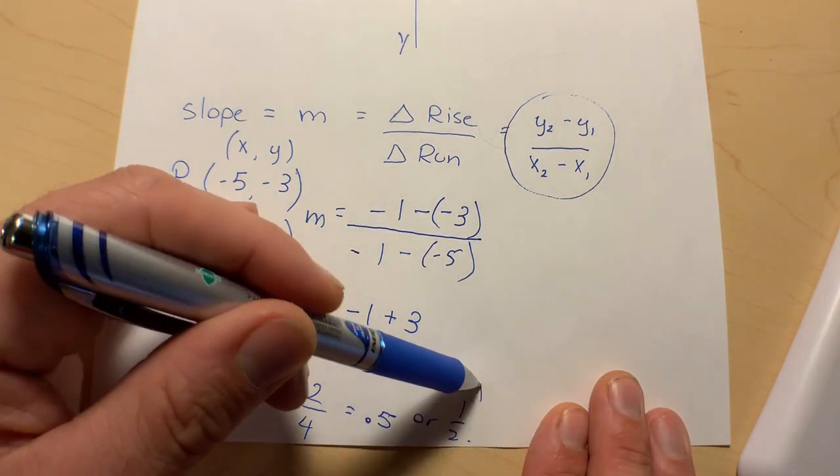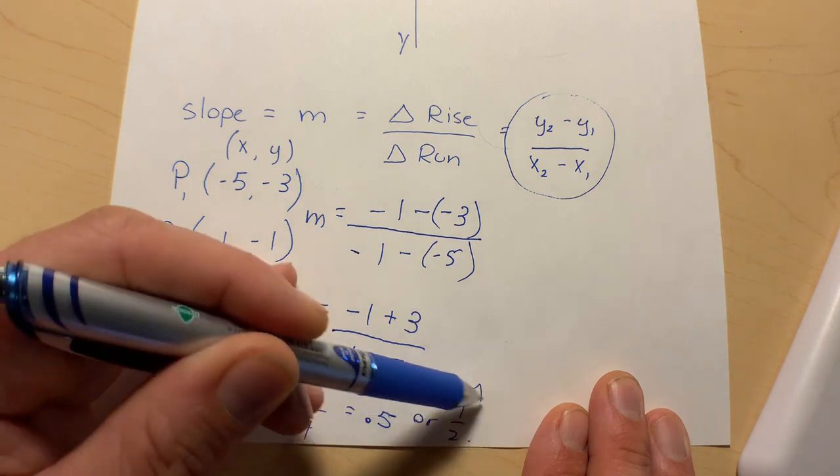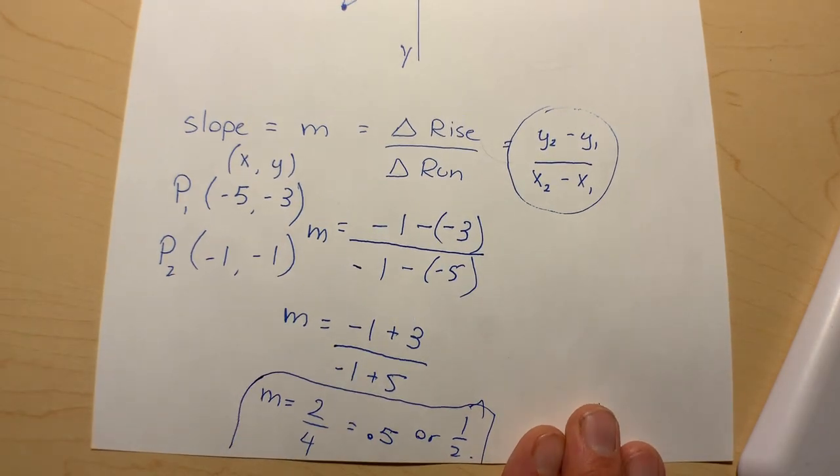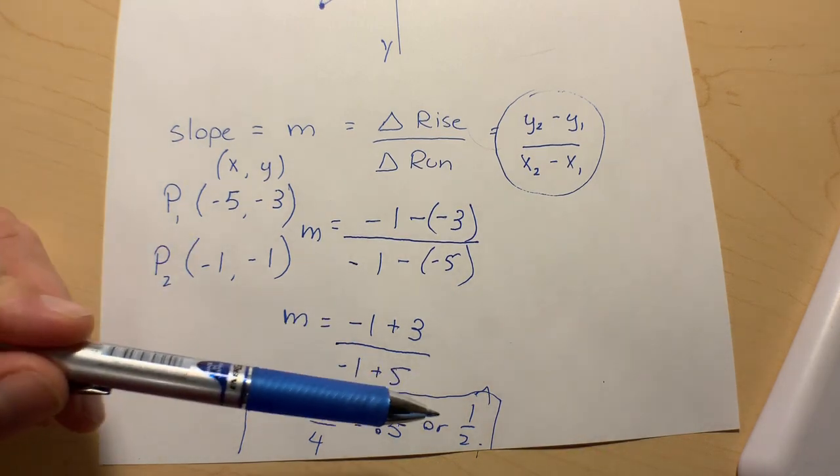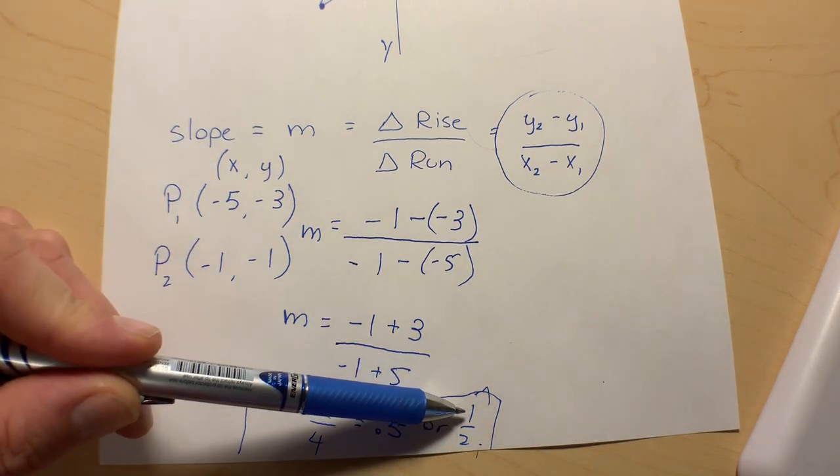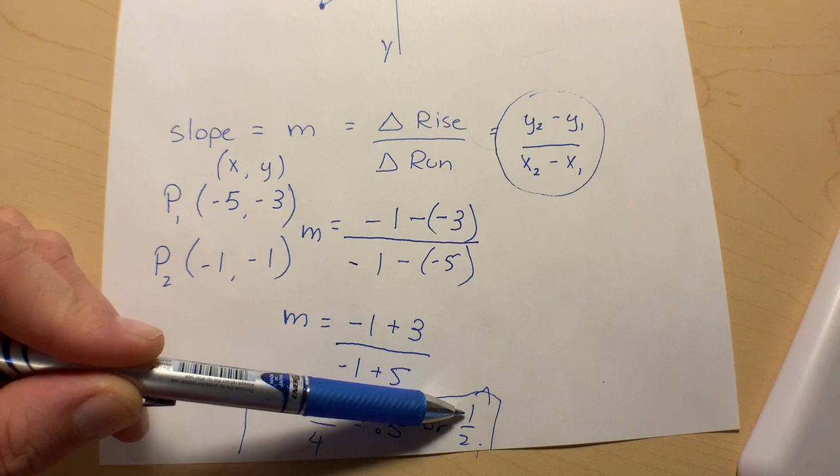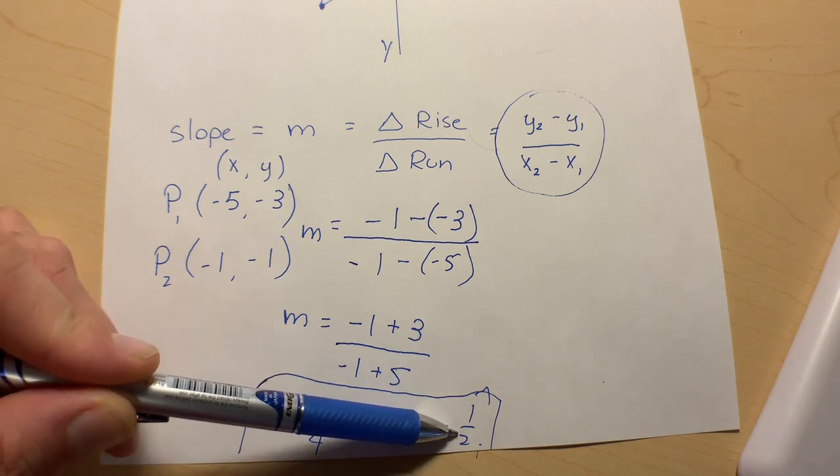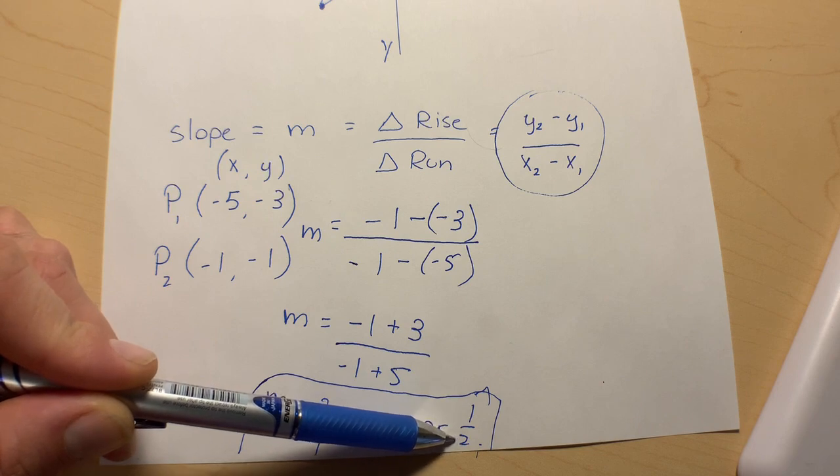Basically that means for every change in up and down by one place, you'll have a change in the horizontal by two places.